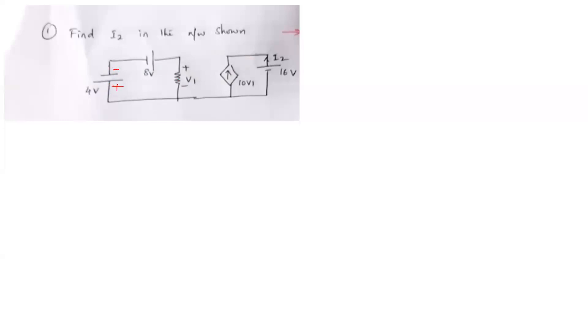This is the positive terminal of the battery, and this is the negative terminal with this as the positive terminal. We will first apply KVL for this loop and go in the clockwise direction. Moving from the 4-volt source from positive to negative, it is a decreasing voltage, so I will write minus 4.